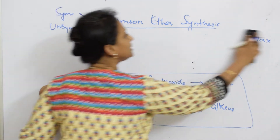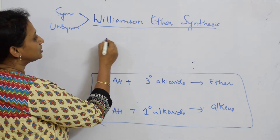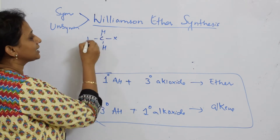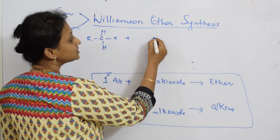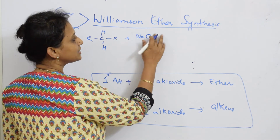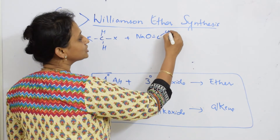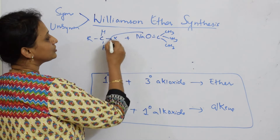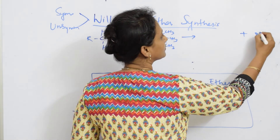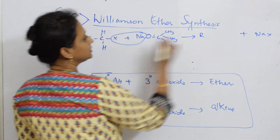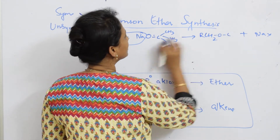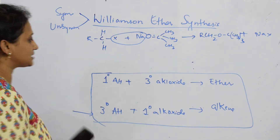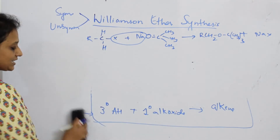Taking a primary alkyl halide: carbon with X, two hydrogens, and one alkyl group — this is your primary alkyl halide. Now taking a tertiary alkoxide: oxygen with sodium, and the carbon attached to three alkyl groups — this is the tertiary alkoxide. We eliminate NaX and the leftover product is R–CH₂–O–C(R)₃, which is the ether.